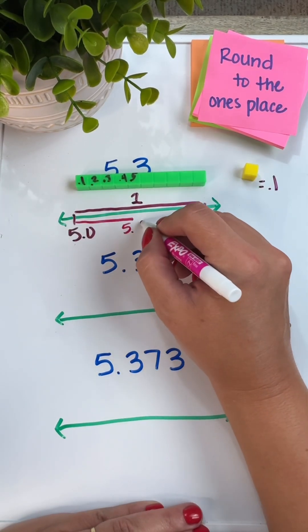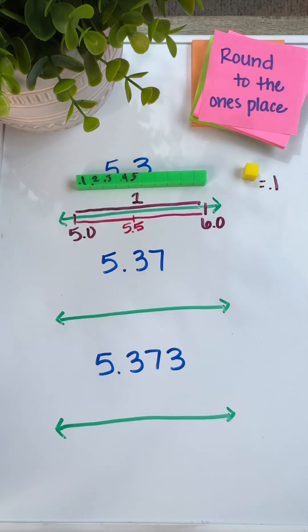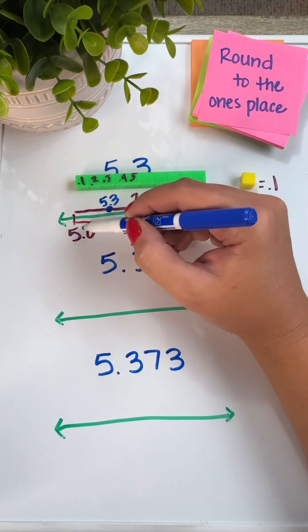By showing that one tenth, it's going to help students determine that middle point. And then once we've labeled our benchmark numbers, we can now round.